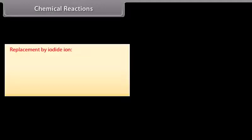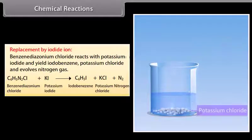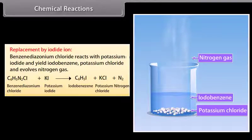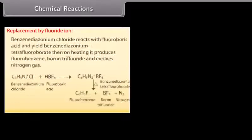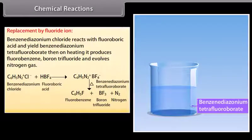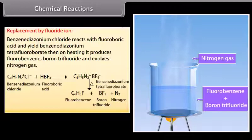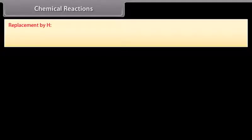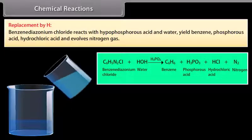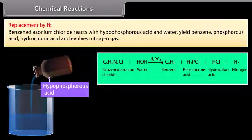Replacement by iodide ion: Benzene diazonium chloride reacts with potassium iodide to yield iodobenzene, potassium chloride, and nitrogen gas. Replacement by fluoride ion (Balz-Schiemann reaction): Benzene diazonium chloride reacts with fluoroboric acid to yield benzene diazonium tetrafluoroborate, which on heating produces fluorobenzene, boron trifluoride, and nitrogen gas. Replacement by H: Benzene diazonium chloride reacts with hypophosphorous acid and water to yield benzene, phosphorous acid, hydrochloric acid, and nitrogen gas.